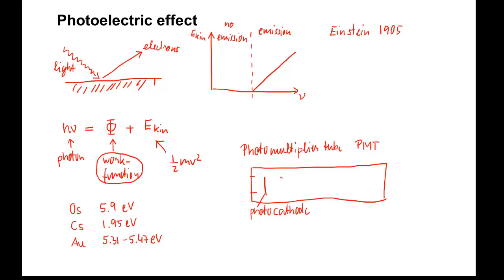Behind the photocathode, there is a series of electrodes that lead all the way to the last electrode that collects the current, which is called the anode.